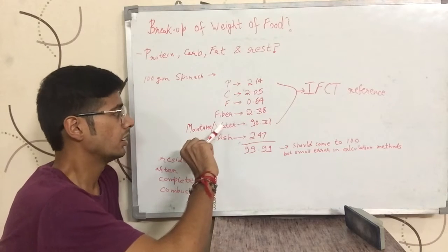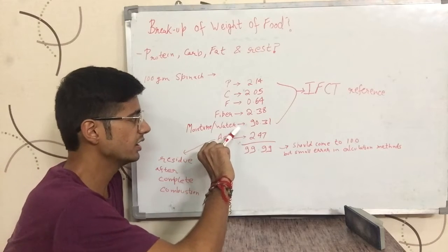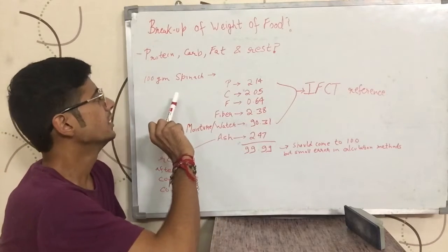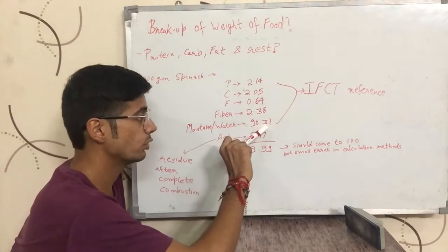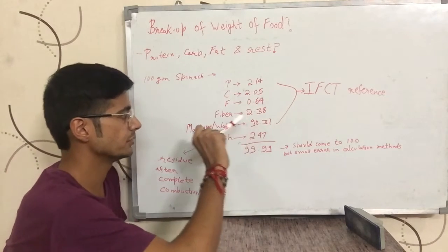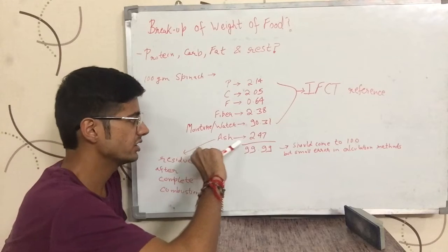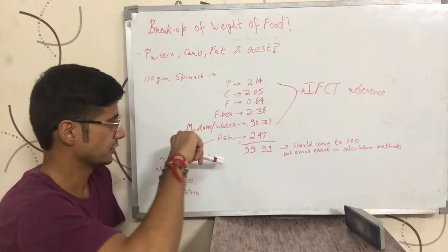It also has fiber 2.38 grams. Now you might have heard about fiber before, but then there is the water content — the moisture content in spinach weighs 90.31 grams — and then comes the ash content which is 2.47 grams.